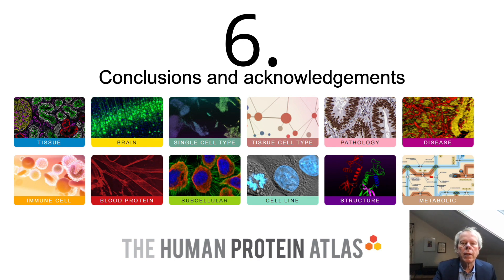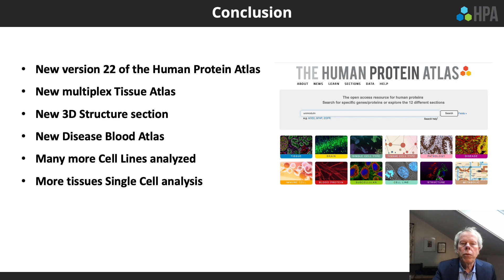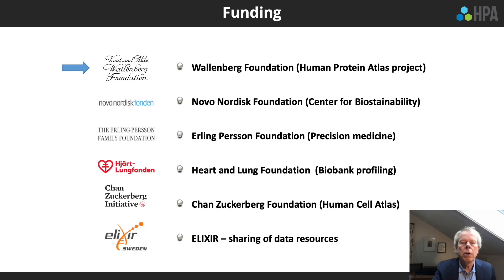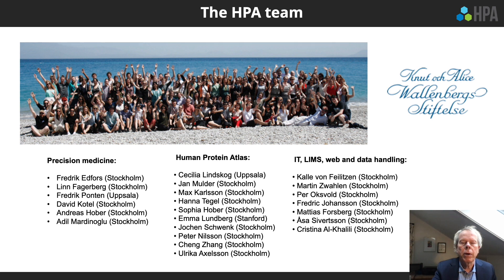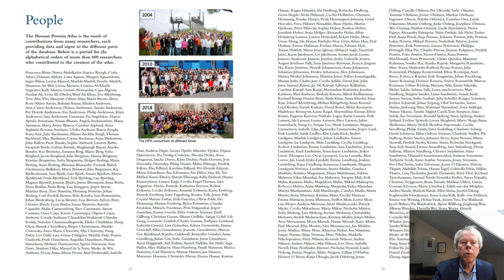In conclusion, the new version 22 of the Human Protein Atlas contains many new features, along with new data on cell lines and single-cell analysis. The consortium is grateful to the Knut & Alice Wallenberg Foundation for the main funding, as well as additional funding sources. The HPA team consists of many different groups, and over the years almost 700 people have contributed to the consortium.